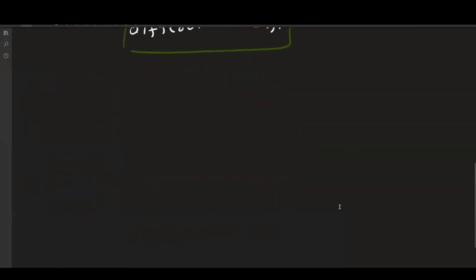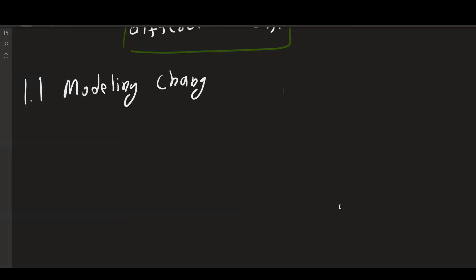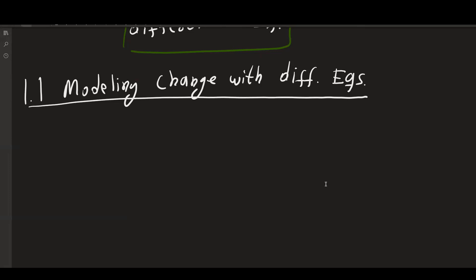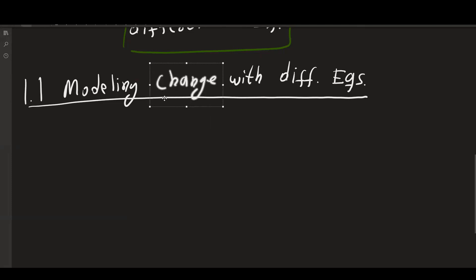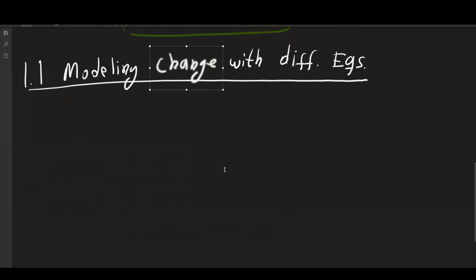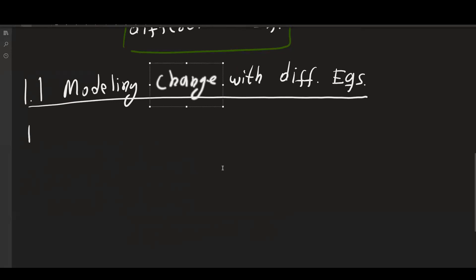This is the introduction to the chapter. Now I'm going to go into section 1.1, which is modeling change with difference equations. Because we're talking about difference equations — not differential equations — the change is going to be discrete, happening like every month or every day. Let me give you a definition here.